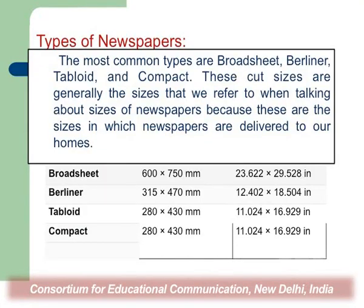The most common types of newspapers are broadsheet, berliner, tabloid, and compact — these are the cut sizes we refer to when talking about newspaper sizes. Regarding principles of news writing, the format depends on the medium. For television, news should be written in a conversational style as if the anchor is interacting with viewers. For radio, news should be written for the ears.